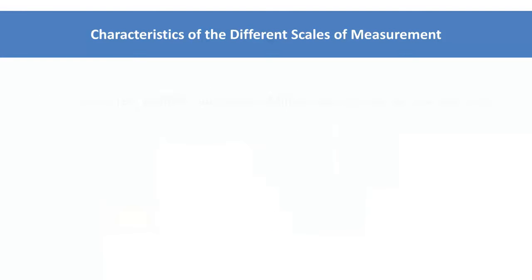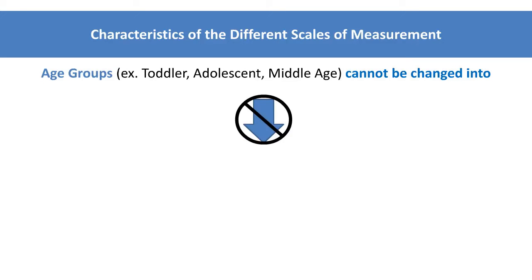Less precise data, however, cannot be made into more precise data. That is, an ordinal level variable, like age groups, cannot be changed into a ratio level variable, such as age in years.